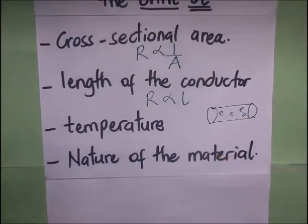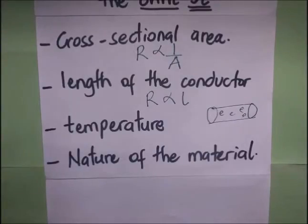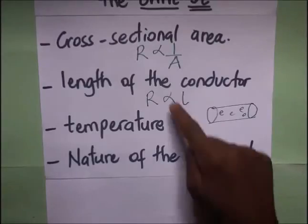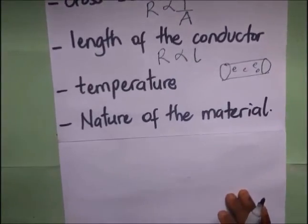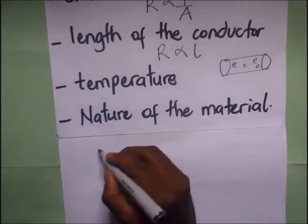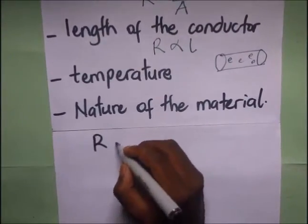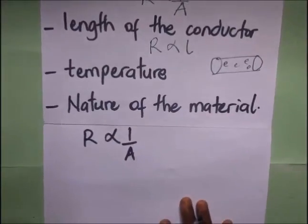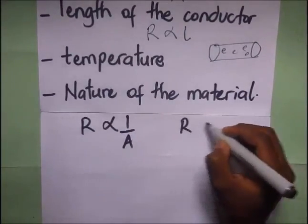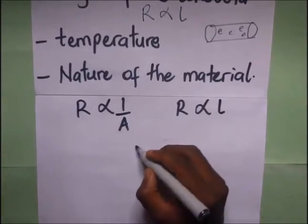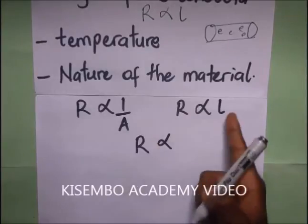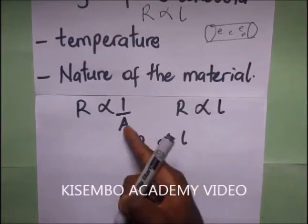Then finally we have the nature of the material. Different materials will behave differently as far as resistance to flow of electrons is concerned. From the first two factors, we have that resistance is inversely proportional to area, and we also have resistance being directly proportional to length. If we are to combine those two, we have that resistance is directly proportional to L over A.